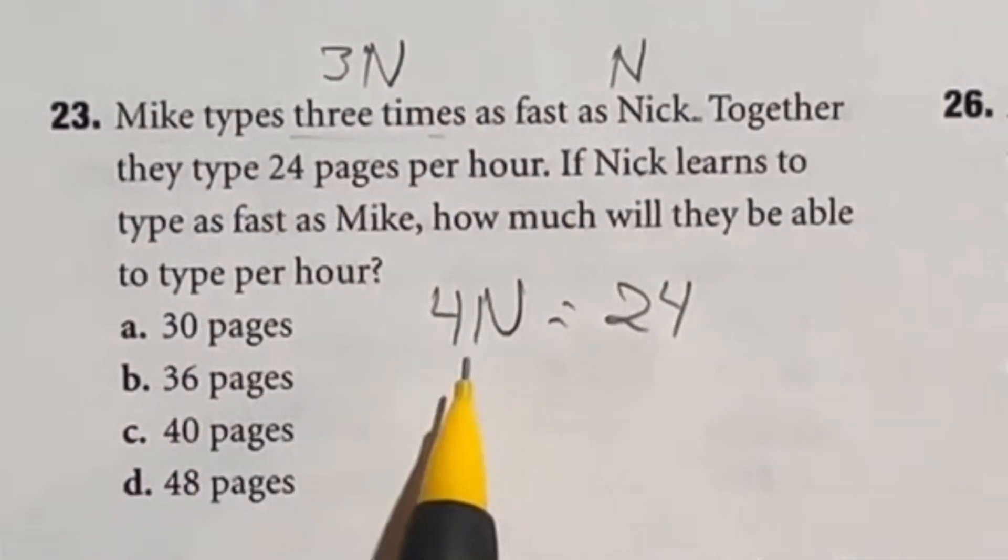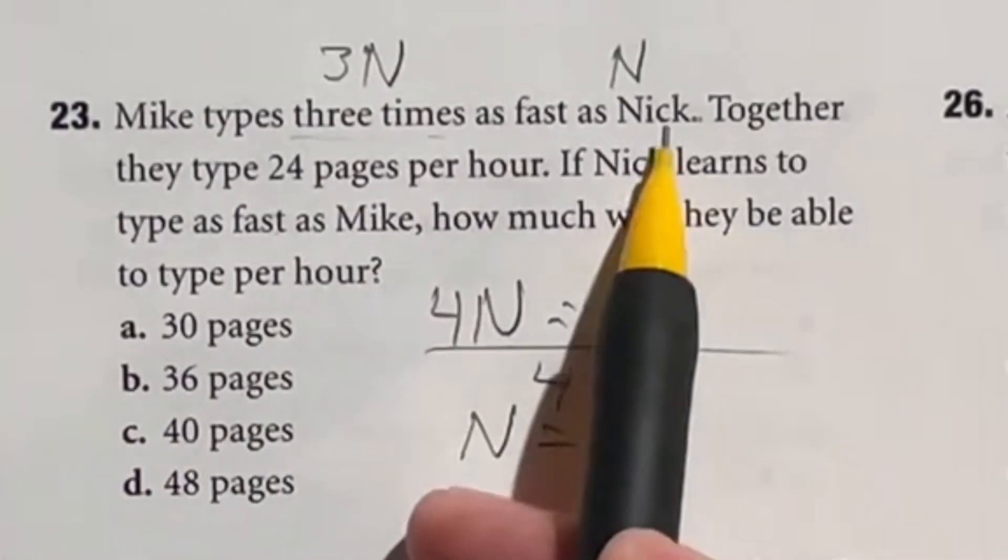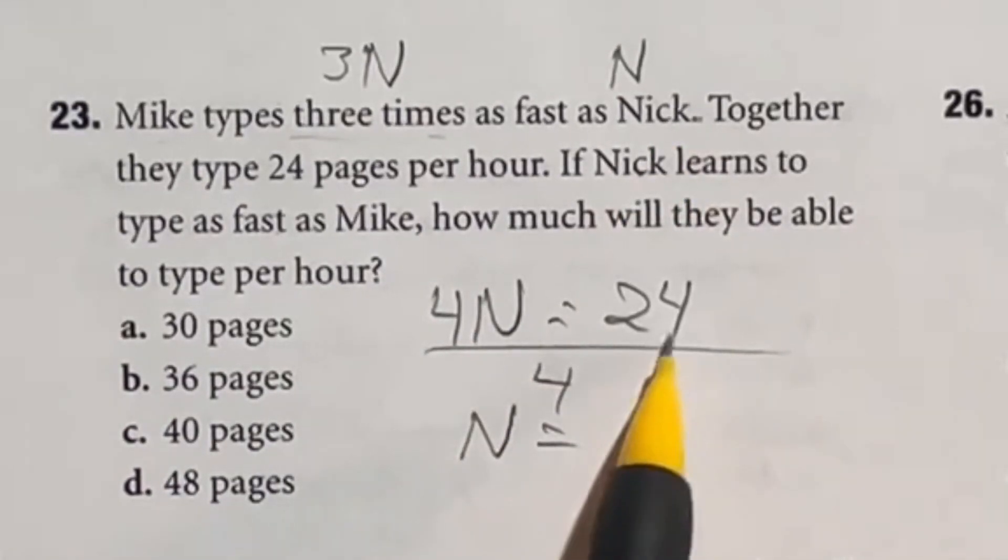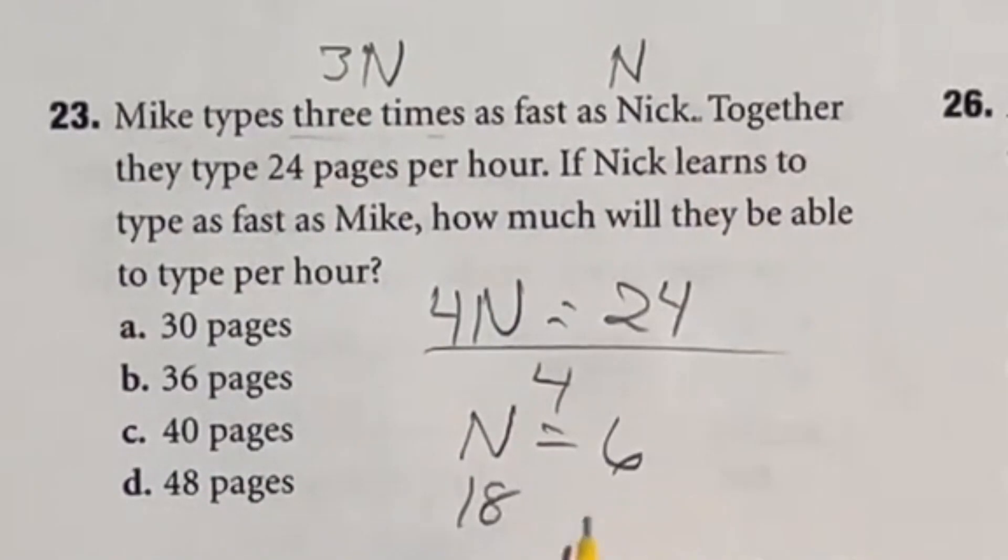Well if that's the case I can just divide both sides by four that's going to give me that n. How much Nick types is going to be 6. Now here's the deal Mike is three times faster than that so 3 times 6 is 18. If Nick were that strong 18 as well and we put the two of those together it gives us 36 total pages.